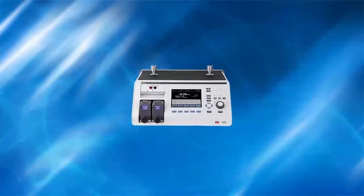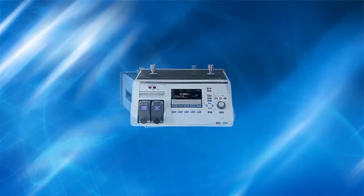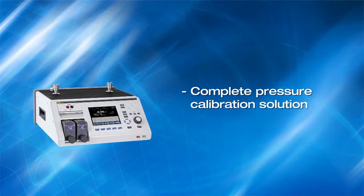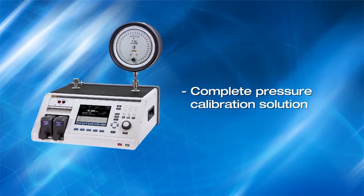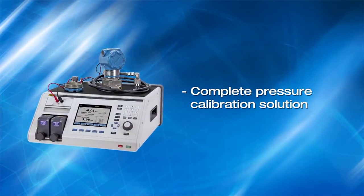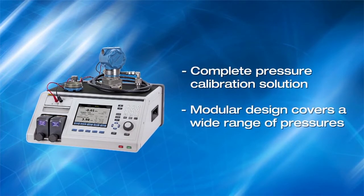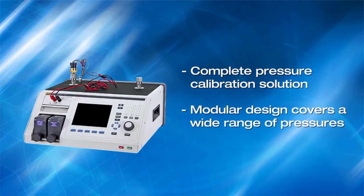The Fluke Calibration 2271A Industrial Pressure Calibrator is a complete solution for calibrating and testing pressure gauges, transmitters, and switches. Its modular design enables it to cover a wide range of pressures.